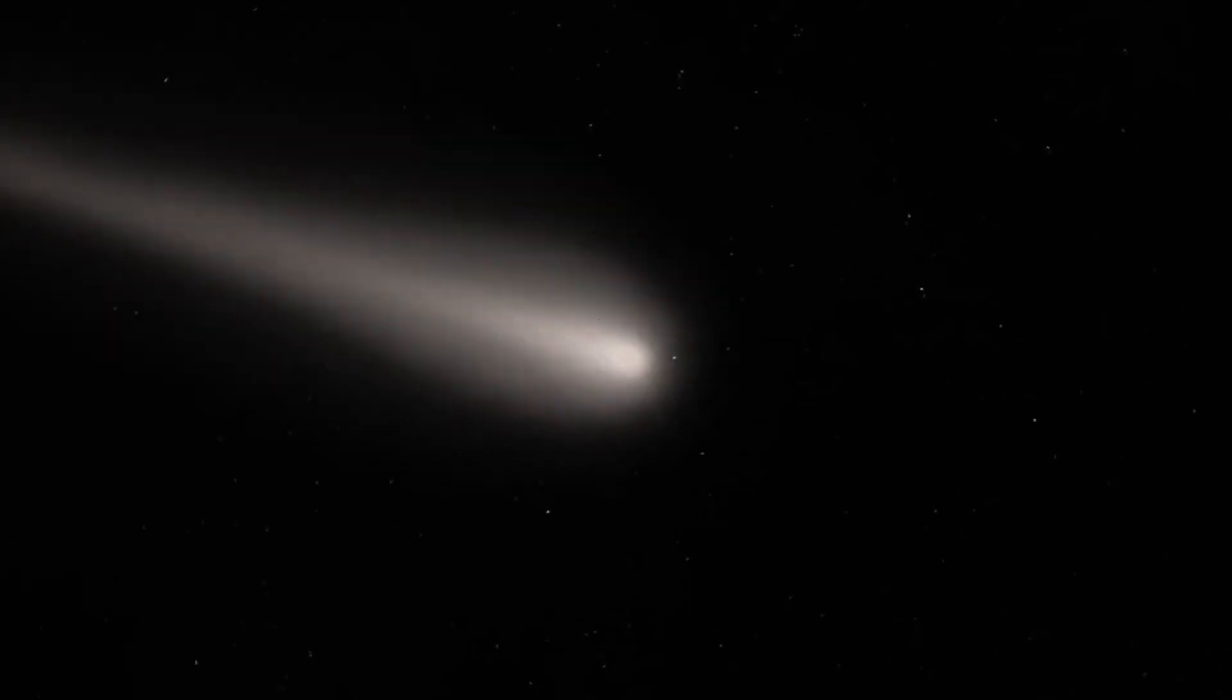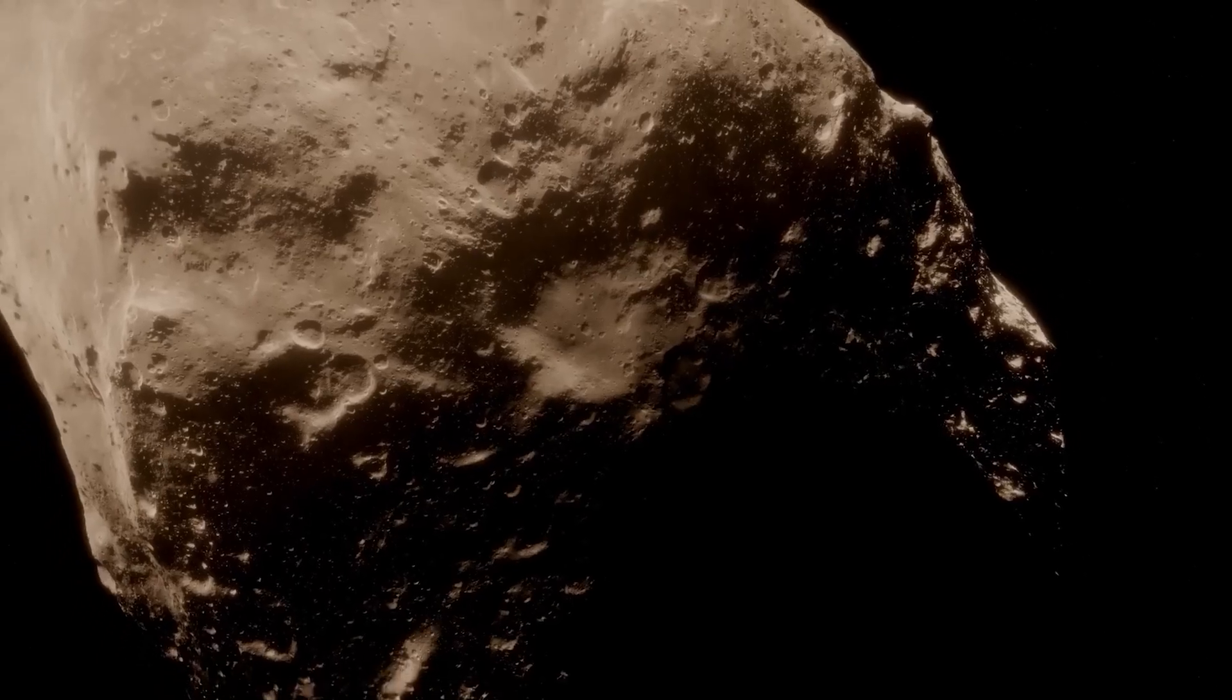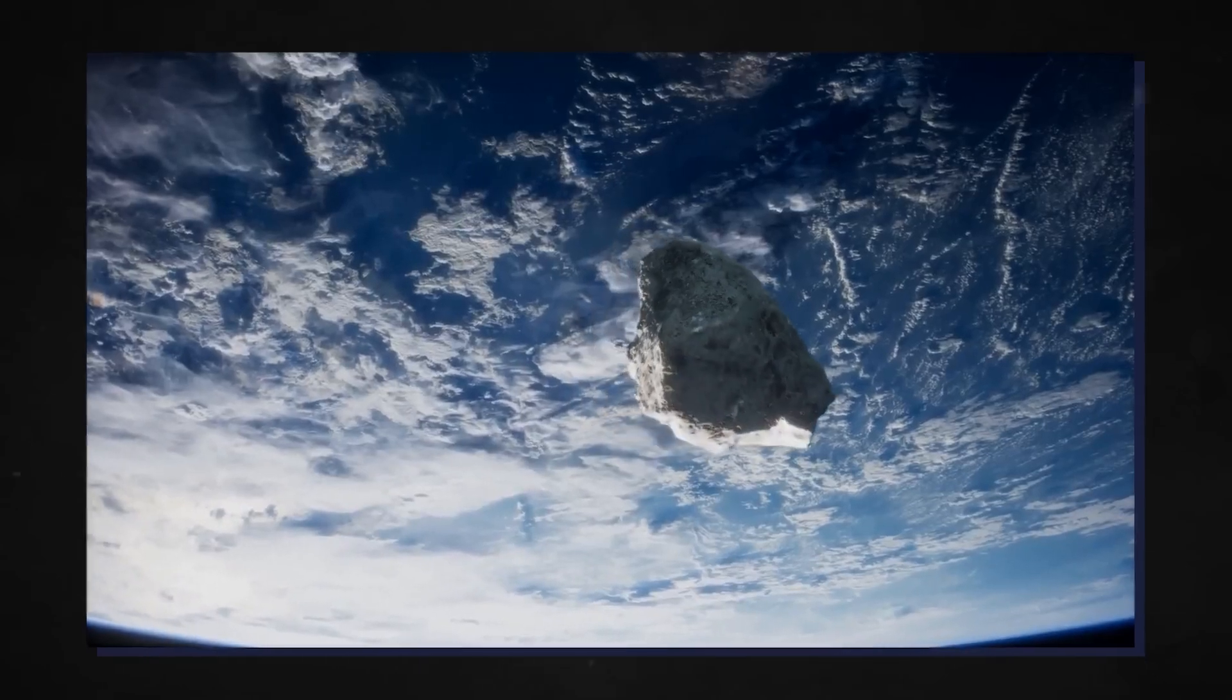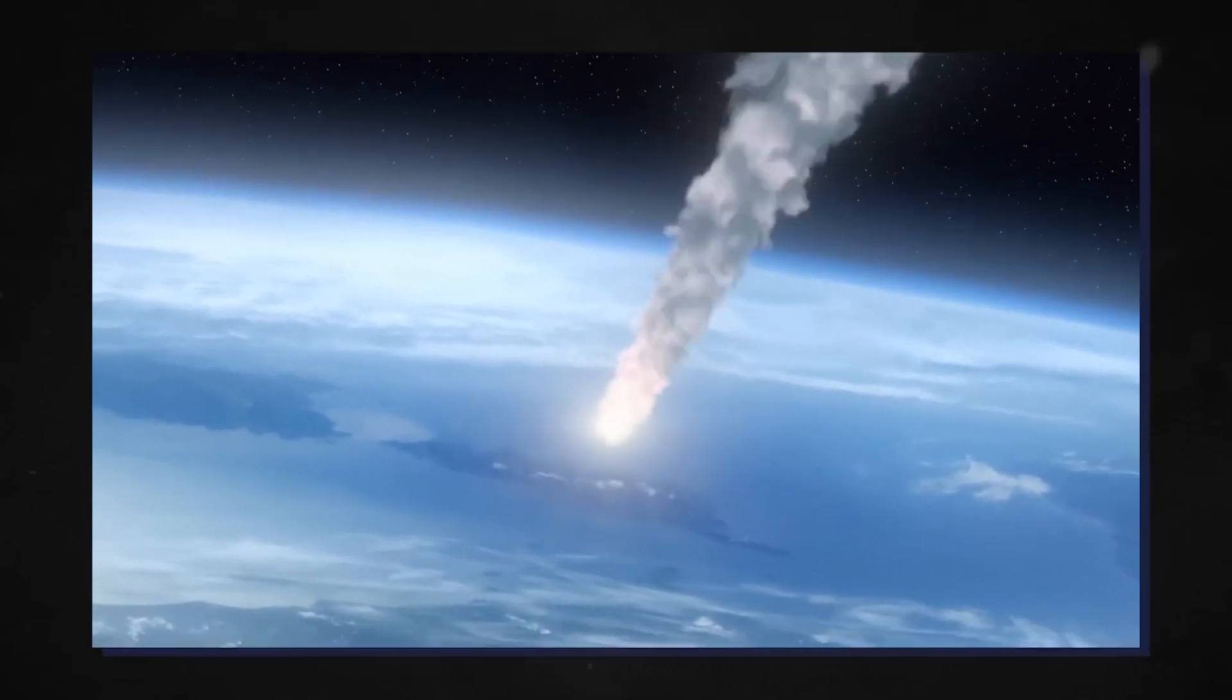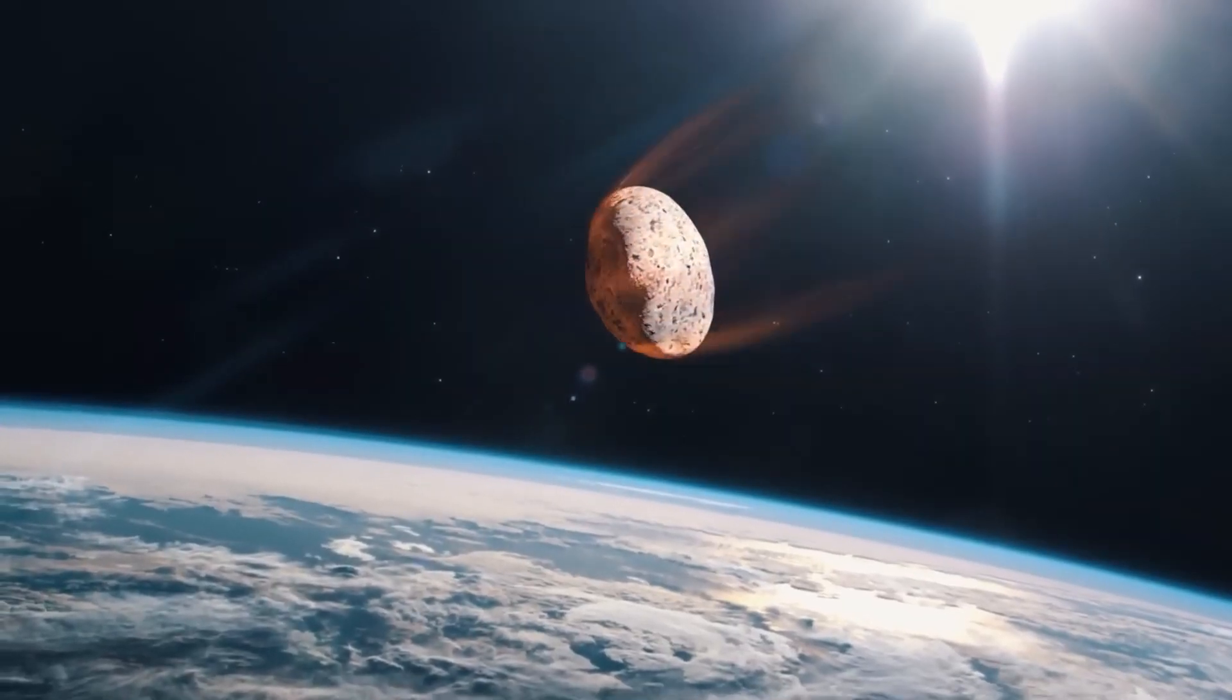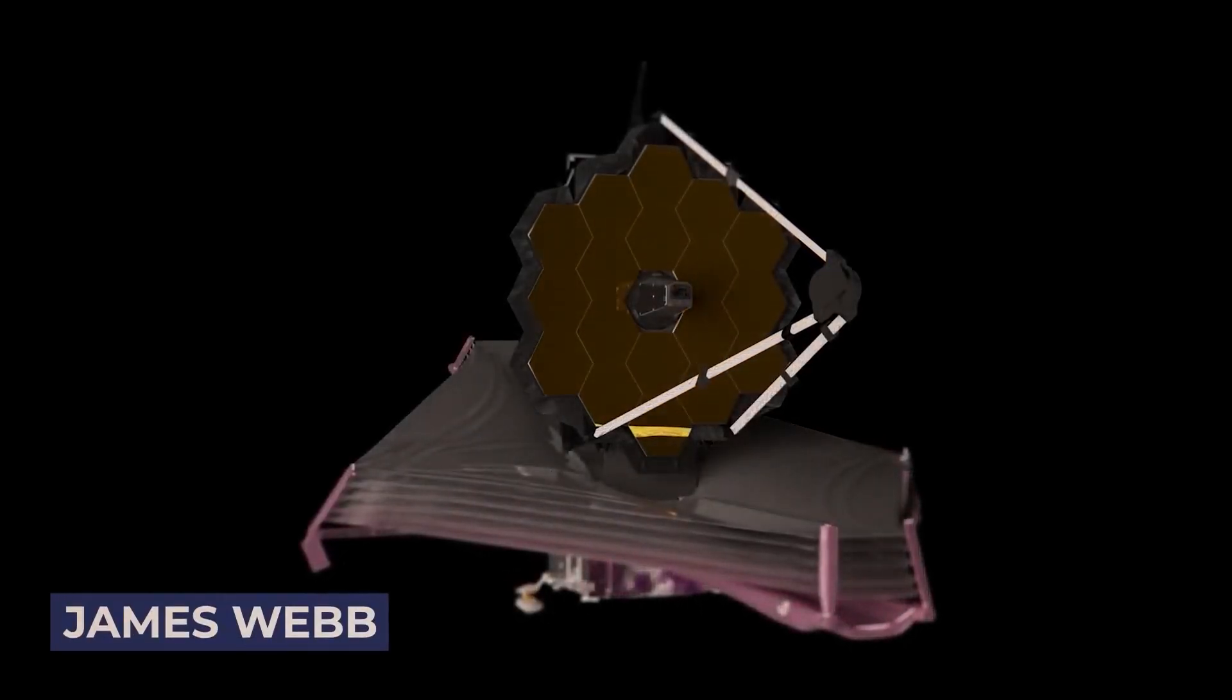It took quite a while for scientists to debunk the myth that the Oumuamua was an alien space probe. The unbelievable visitor from deep space is simply an expelled piece of another solar system from a faraway galaxy. Scientists believe its strange acceleration was caused by escaping hydrogen gas from its hydrogen-rich body. As it approached the sun, it warmed up, and the trapped hydrogen inside it escaped and gave it a push. So it turns out it was just a unique asteroid from an ancient interstellar planet.